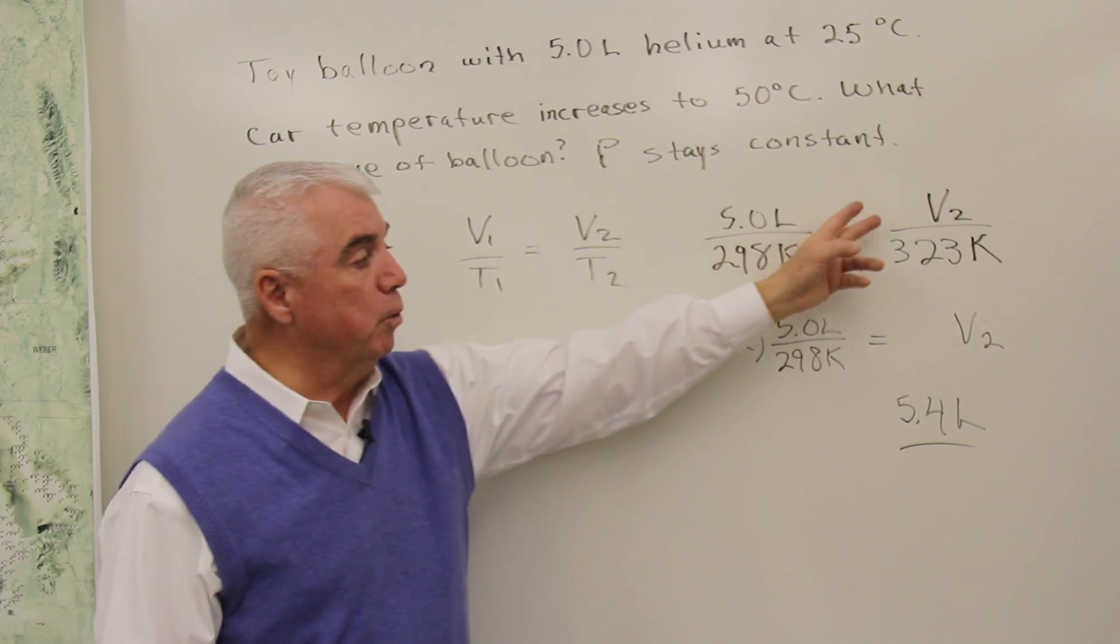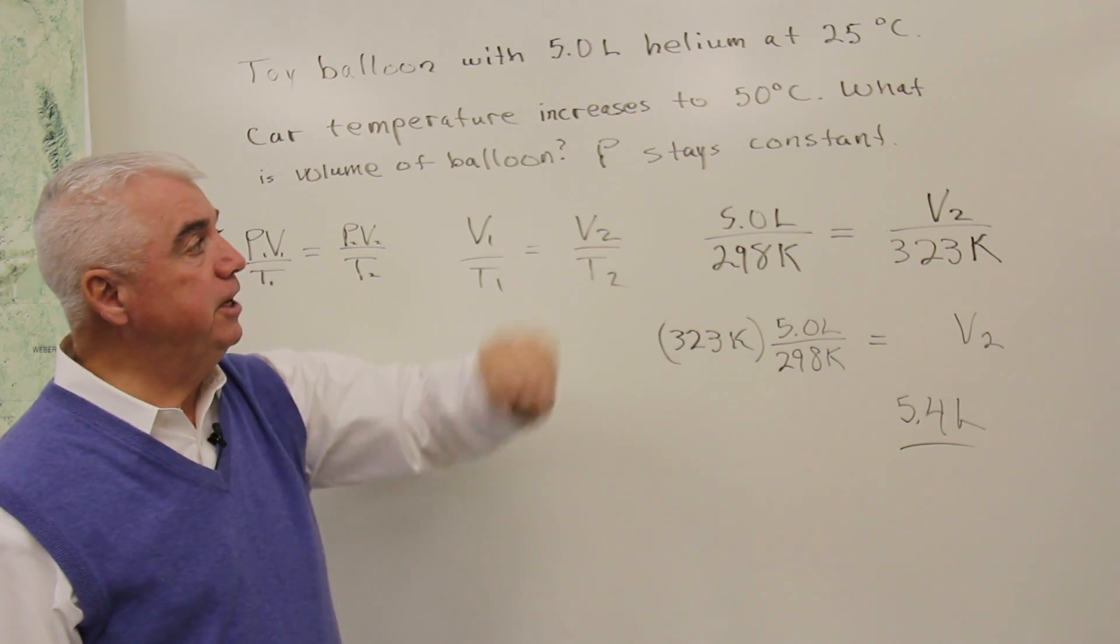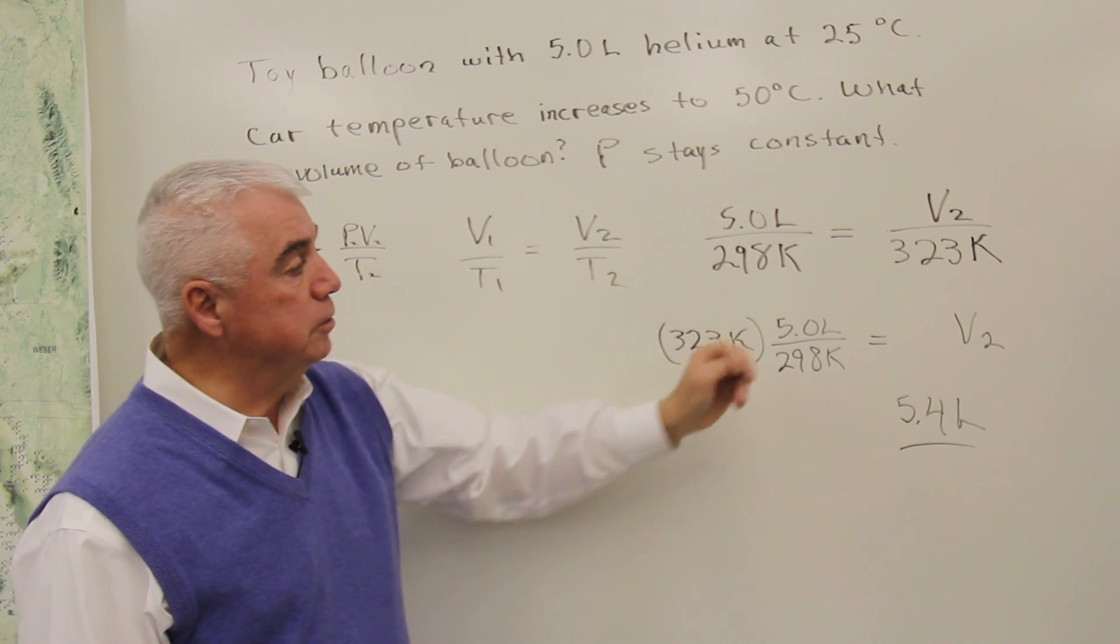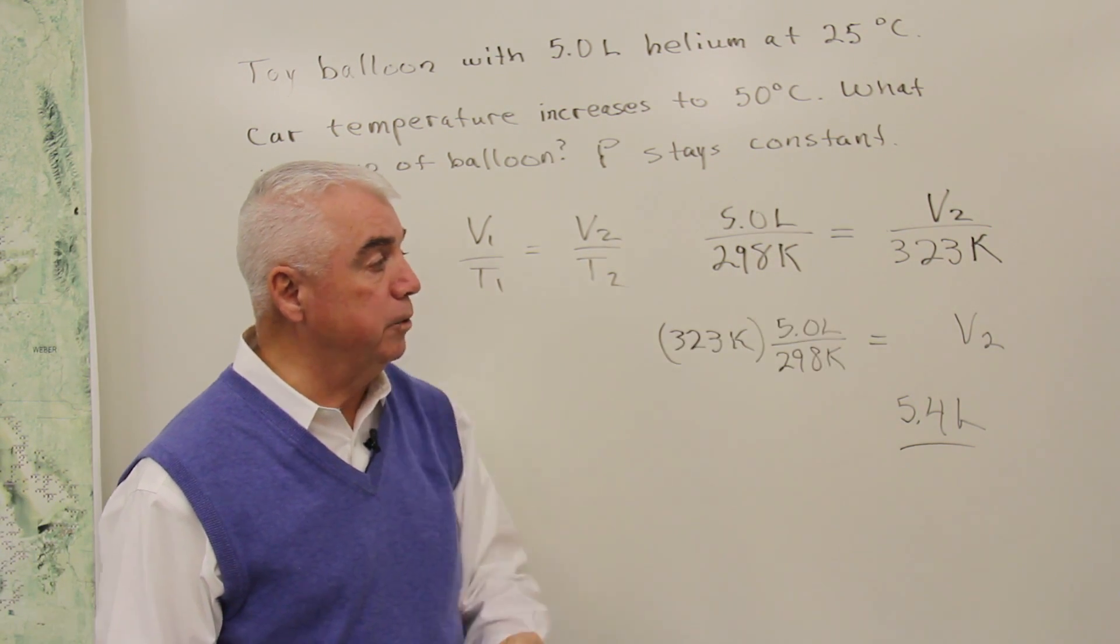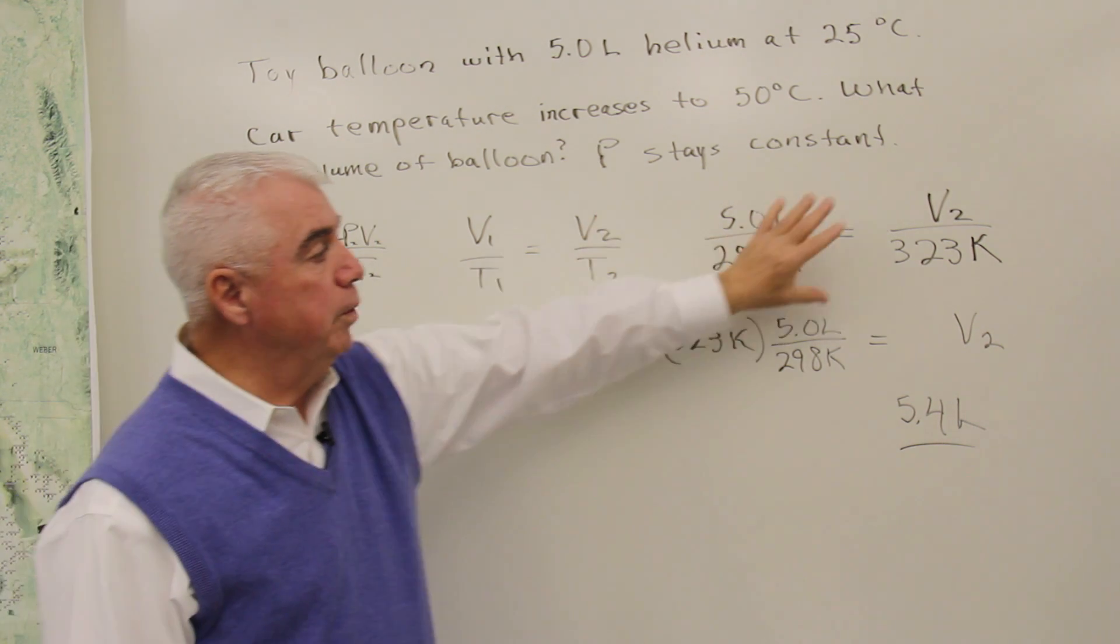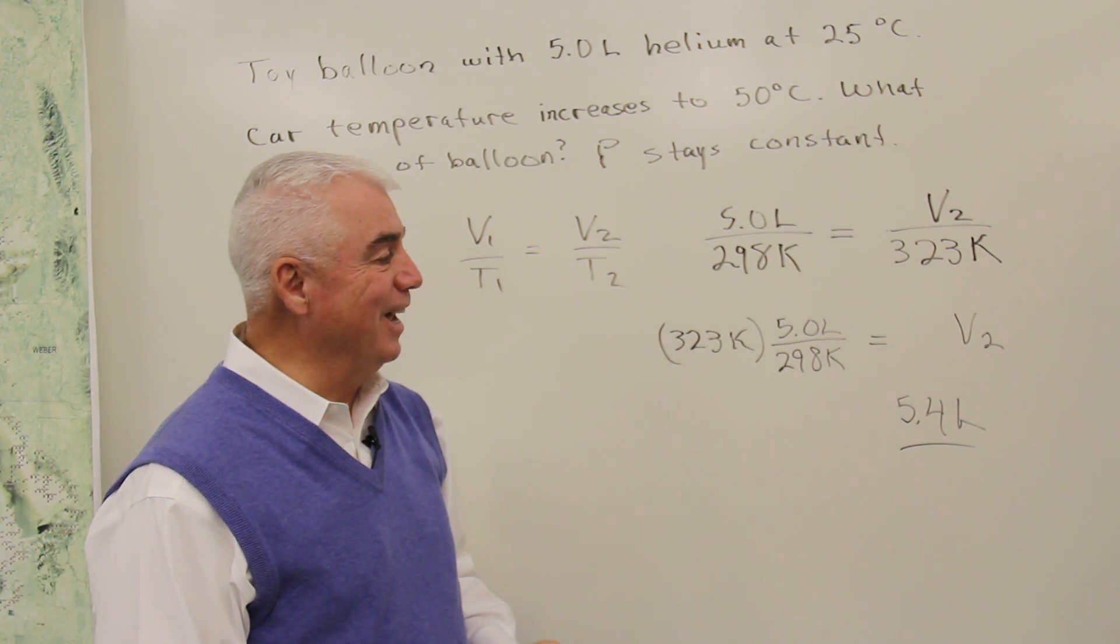It's V2 that we're after. 50 degrees plus 273 is 323 kelvin. So now we have the equation all set up.